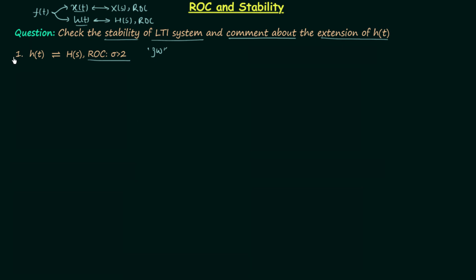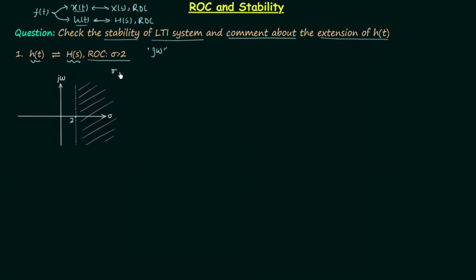Let's move to the first part of the question. Here h(t) is the impulse response with H(s) as the transfer function, and the ROC is given as the region where σ is greater than 2. In the S-plane, we draw a vertical line at σ equal to 2. This is shown as a dotted line, and the equality sign is not included because poles are not included in the ROC — so the ROC is σ greater than 2 strictly, not greater than or equal to 2.